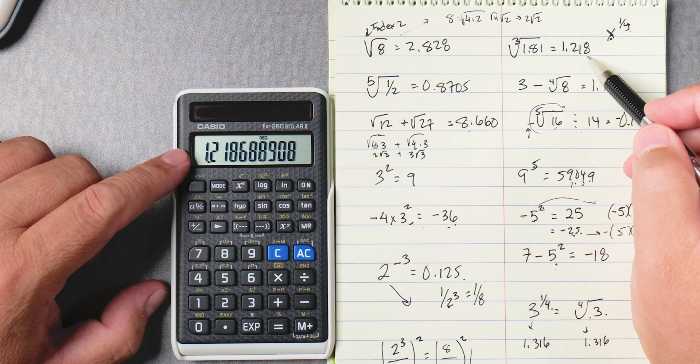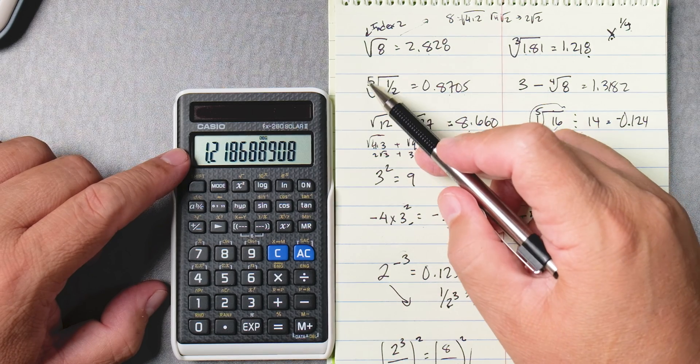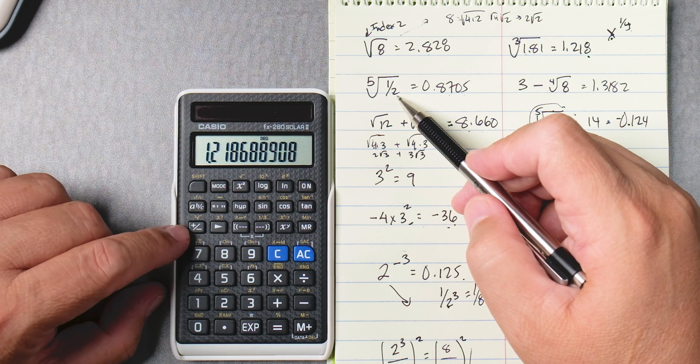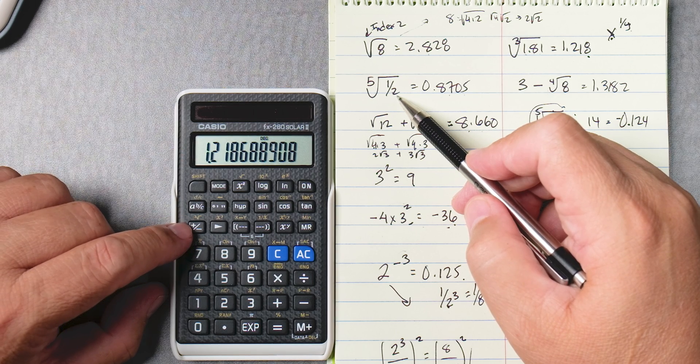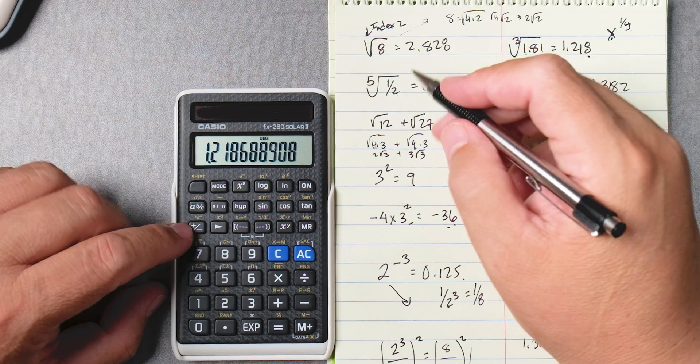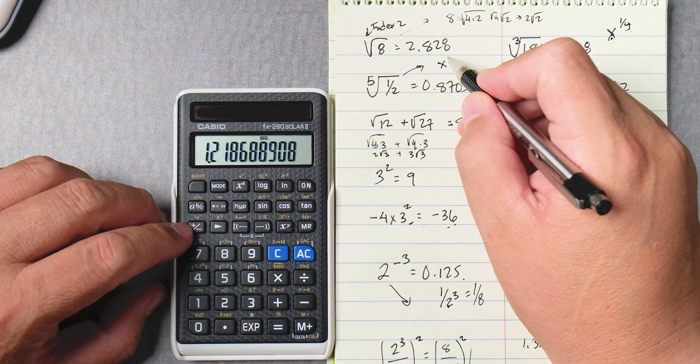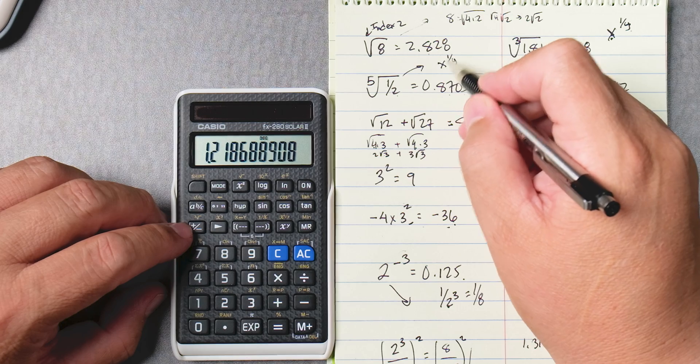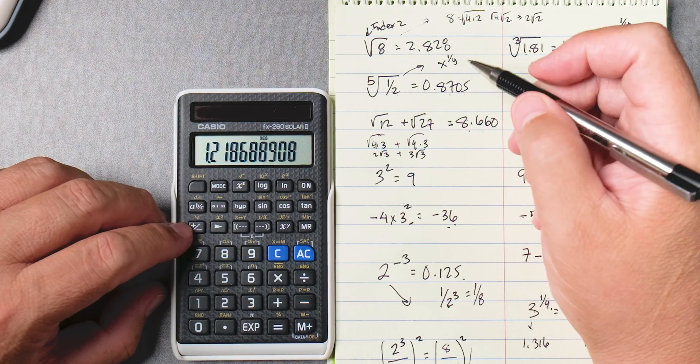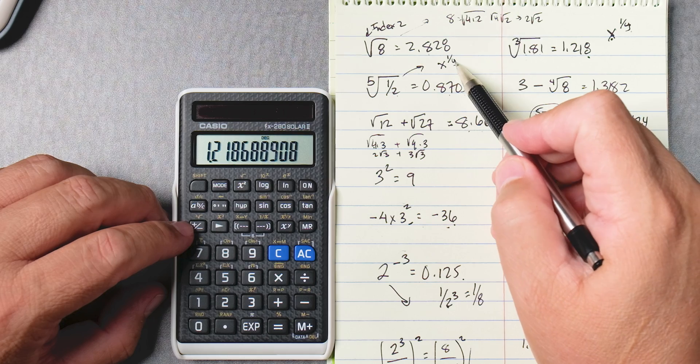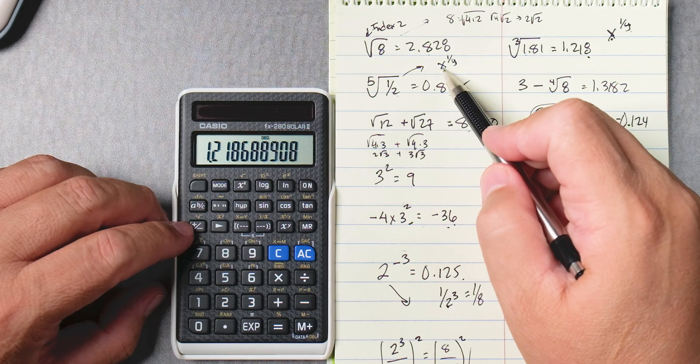Okay now this one's the fifth root of a half. There is no fifth root here, and the way to do this one is that we're going to have to use the x to the 1, x to the 1 over y key. This 5 is the y and this half is the x.